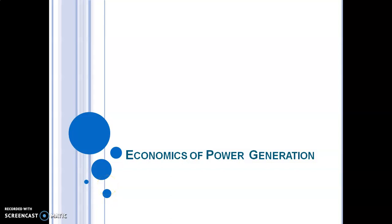Hello students, welcome to the subject of Power Plant Engineering. Today we start a new chapter — Chapter 12: Economics of Power Generation. In all fields of industrial production, economics play a very important role. In power plant engineering, economics of the power system uses certain well-established techniques for choosing the most suitable system. Power plant design must be made on the basis of the most economic conditions, not on the most efficient condition, as profit is the main basis in the design of the plant.